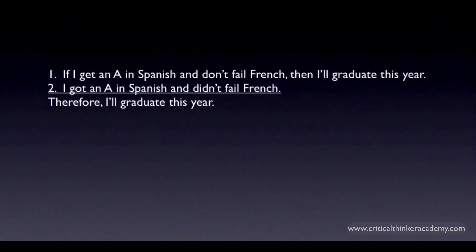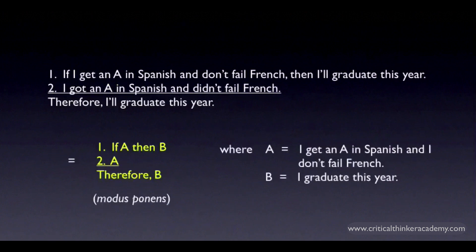Here's an example: If I get an A in Spanish and don't fail French, then I'll graduate this year. I got an A in Spanish and I didn't fail French, therefore I'll graduate this year. This is just modus ponens. The antecedent in this case has some structure to it — it's a compound claim, a conjunction: 'I got an A in Spanish and I don't fail French.' It's important when analyzing conditional arguments to understand that conditional claims can have complex parts to them, and it's still equivalent to a simple conditional of the form if-A-then-B.